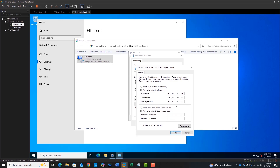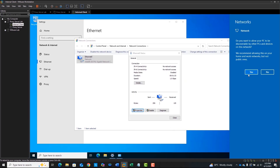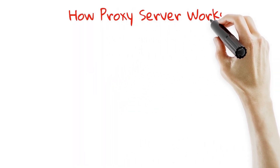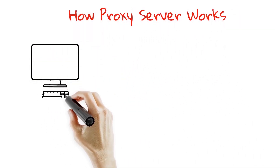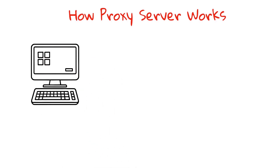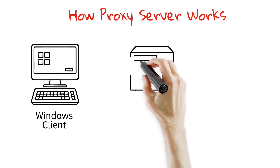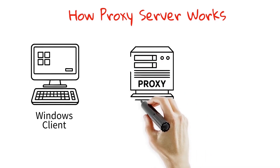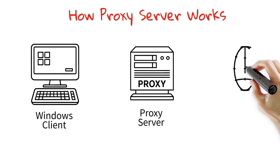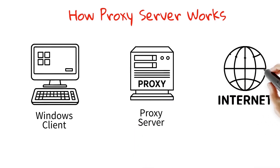Before we install Ubuntu and set up the proxy, let's quickly understand what a proxy server actually does. A proxy server acts like a middleman. When a client like our Windows Server requests a web page, it doesn't talk directly to the internet. Instead, it sends that request to the proxy, which forwards it, fetches the data, and sends it back. This allows you to filter access, log traffic, or even block certain websites.